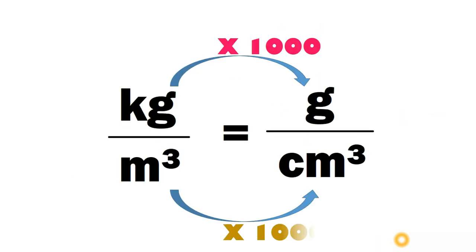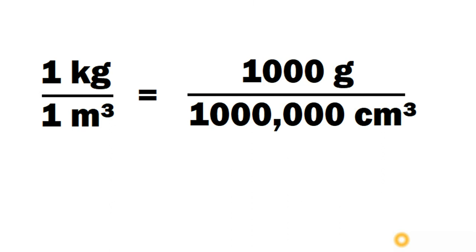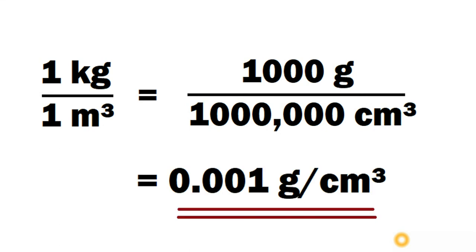Moving back, to convert one meter cube into centimeter cube we multiply by ten lakh. So, one kilogram by one meter cube equals one thousand grams divided by ten lakh centimeter cube. When we simplify this, we get the answer as 0.001 gram per centimeter cube. This is the answer for the conversion of one kilogram per meter cube to gram per centimeter cube. Thank you.